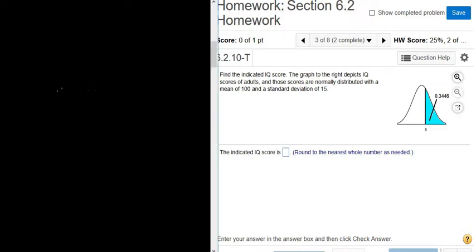In this problem, we're given an area and we're asked to find the value of x. So we're going backwards. So here's x. And then the area is over here, and it's shaded to the right. It's this blue region. And we're told that the area is 0.3446.